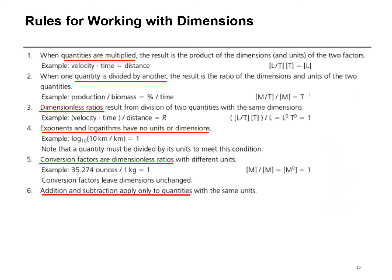Rules for working with dimensions. When quantities are multiplied, the result is a product of the dimensions. If we have velocity, which is units of length per time, multiplied by time, then time drops out of velocity and we're left with a length.